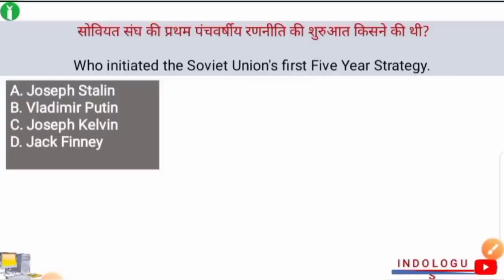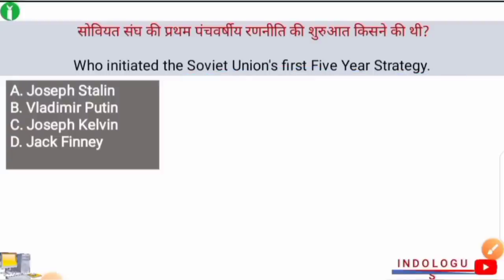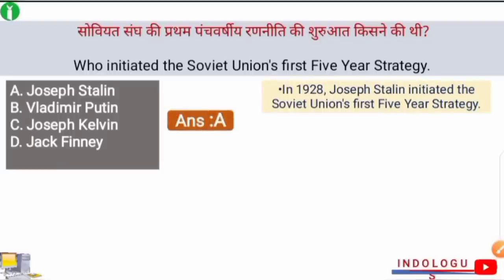Next question: Who initiated the Soviet Union's first Five Year strategy? The right answer is option A — Joseph Stalin. In 1928, Joseph Stalin initiated the Soviet Union's first Five Year Plan for the first time. You have to remember this.